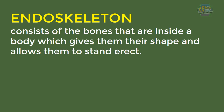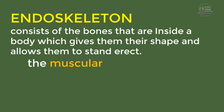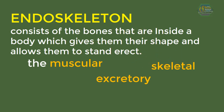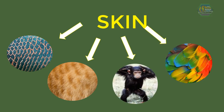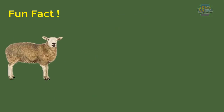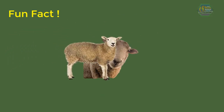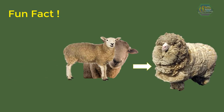All vertebrates also have some of these systems: the muscular, skeletal, excretory, immune, and nervous systems. They could also have skin covered with scales, hair, or feathers. Fun fact — speaking of hairy animals, sheep can grow their wool so much that if you leave them without a haircut, they become blind from too much wool.